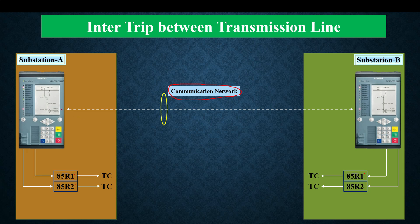The substation that sends the inter trip signal has already tripped its own circuit breaker. Simultaneously it sends the inter trip signal so the remote circuit breaker also trips. Inter trip is used for better protection of the network — if protection at one end operates but the protection at the other end fails for any reason, the inter trip ensures that the remote circuit breaker is also tripped, providing redundant protection for the transmission line.